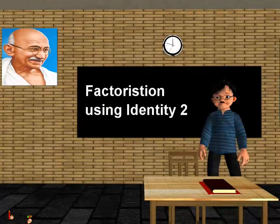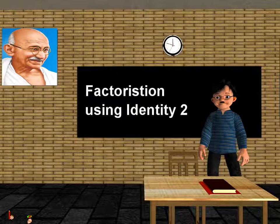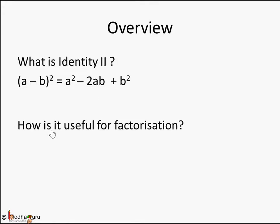Hello children. In this lesson we are going to learn how to do factorization of algebraic expressions using identity 2. First, let's revise what identity 2 is: a minus b whole square is equal to a square minus 2ab plus b square. This is what we have learned in the algebraic expressions chapter.